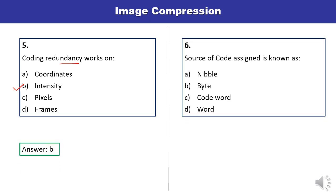Question 6: A source code assigned is known as — nibble, byte, codeword, or word? Codeword is actually the correct answer.